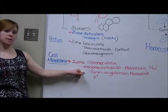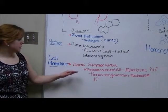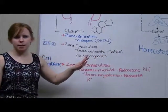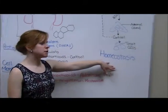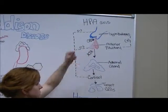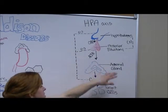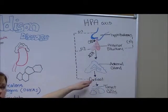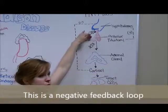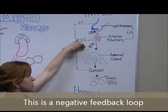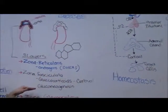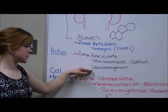Aldosterone is released via the renin-angiotensin mechanism. If we think about cortisol regulation, the body uses the HPA axis — the hypothalamic-pituitary-adrenal axis — to maintain homeostasis. The hypothalamus senses cortisol levels in the blood. If cortisol levels are low, the hypothalamus releases corticotropin-releasing hormone to the anterior pituitary, which in turn releases adrenocorticotropic hormone to the adrenal glands, which then release cortisol and drive gluconeogenesis.